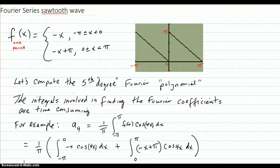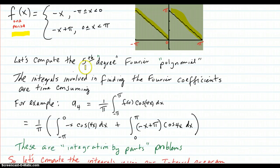Now we see the sawtooth wave, and here is one period of such a wave. Negative x from negative pi to zero, that's this part. And then negative x plus pi on zero to pi, that's this part over here. So maybe it has a little bit of an edge to it, we'll see. So let's compute the fifth degree Fourier polynomial.